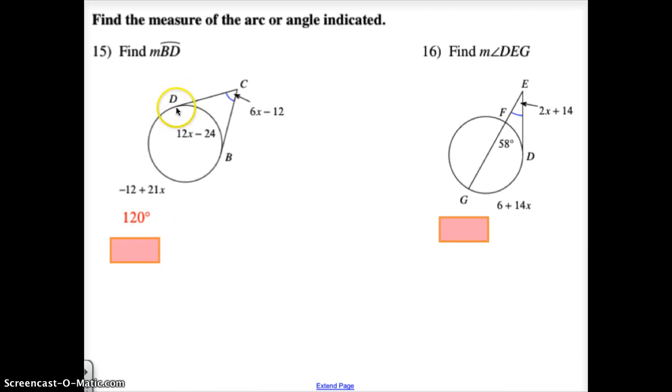Many people might get confused with number 15 thinking that because the tangent is here, that arc db or bd is this distance all the way around here. Remember, anytime we're talking about an arc that only has two letters, we're talking about the minor arcs.